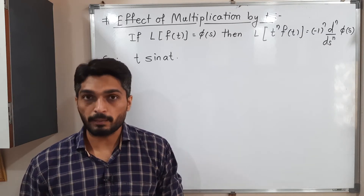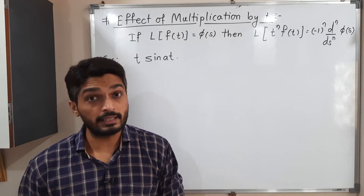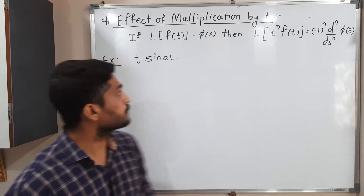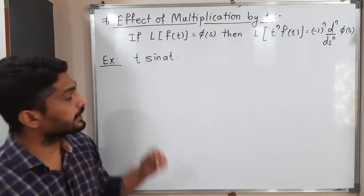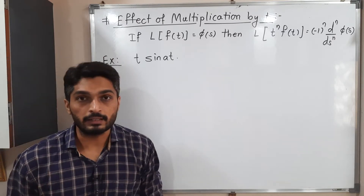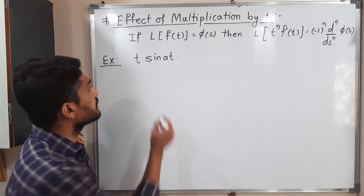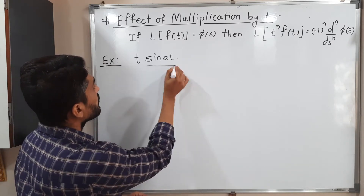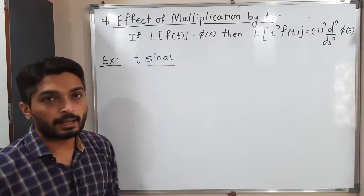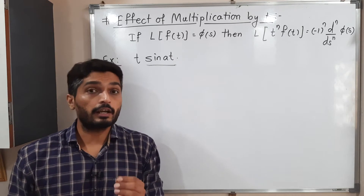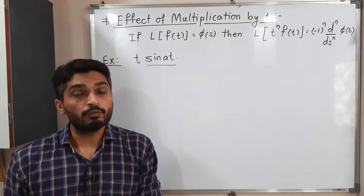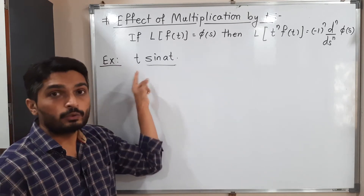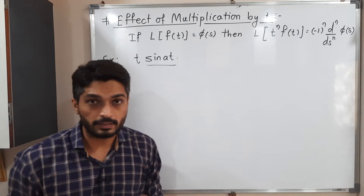Let us discuss one example so you can clearly understand how to apply this technique. We have the function t·sin(at). What we do first is focus on sin(at) — we find the Laplace transform of sin(at), and after that we will use the effect of multiplication by t to account for this t.